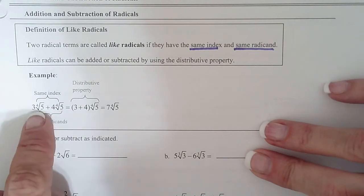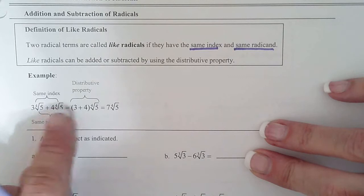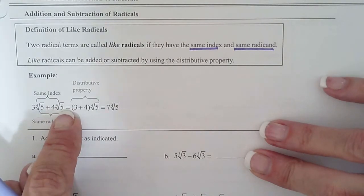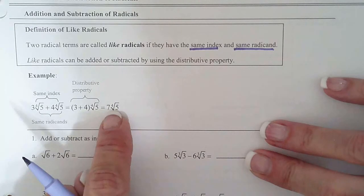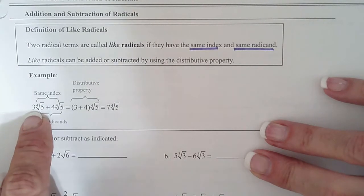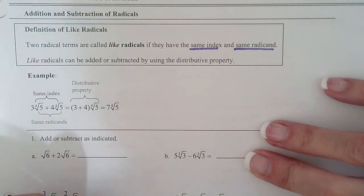So when we look at this example, we go, yep, they both have the same index, 4. They both have the same radicand, 5. So just like with x's, if we had 3x plus 4x, we'd get 7x. So 3 fourth root 5 plus 4 fourth root 5 is 7 fourth root 5.